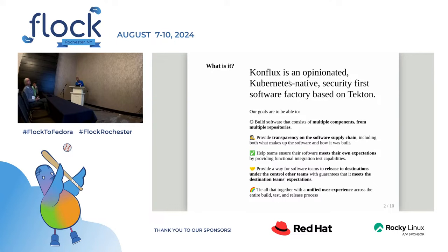Conflux is an opinionated Kubernetes-native security system for a software factory. It's based on Tekton. Our goals are to be able to build software composed of multiple components. Unlike GitHub Actions, which is typically oriented on a single repo, Conflux is oriented on building things from lots of repos and lots of components coming together. We're aimed at providing transparency on the software supply chain.